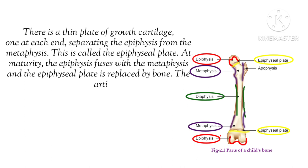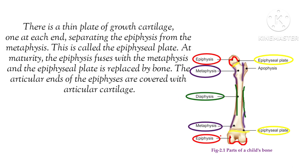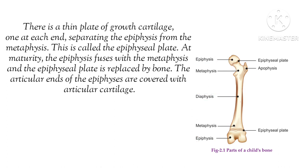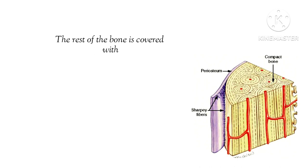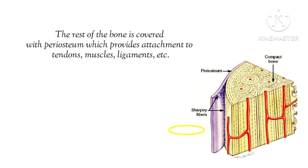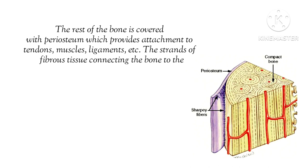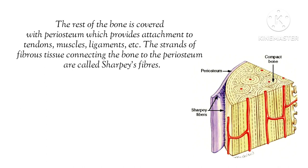The epiphyseal plate is present in children. As you mature, this plate is replaced by bone through ossification. The epiphysis ends are covered by articular cartilage at the upper part, and the rest of the bone is covered with periosteum. Periosteum provides attachment for ligaments, muscles, and tendons. Strands of fibrous tissue connecting the bone to the periosteum are called Sharpey's fibers.